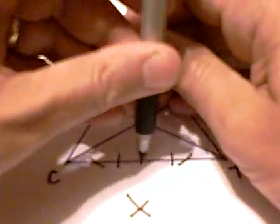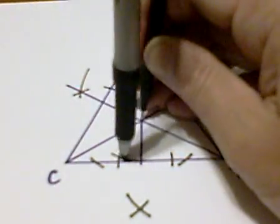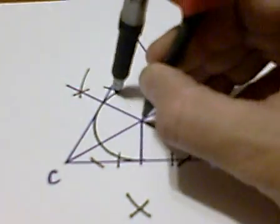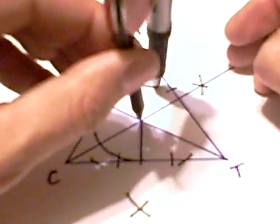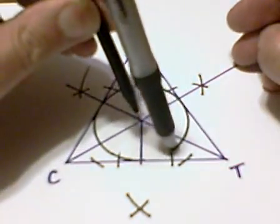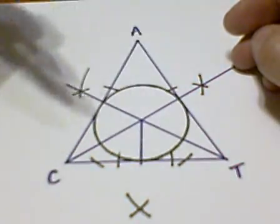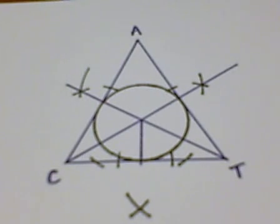Next, we want to set our compass to that length, and we can strike a circle. And we can see that it touches all three sides very nicely of our triangle.